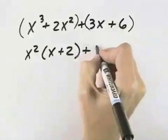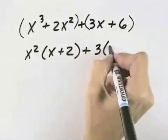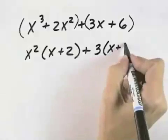Now in my second grouping, I have a common factor of 3. So if I pull the 3 out, I'm left with x in the first term, and dividing 6 by 3 gives me 2.